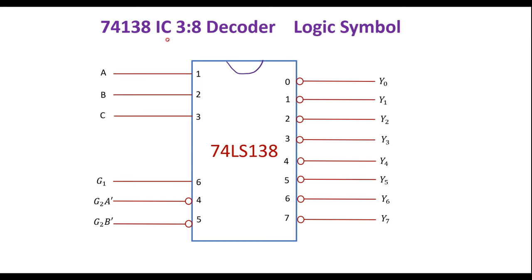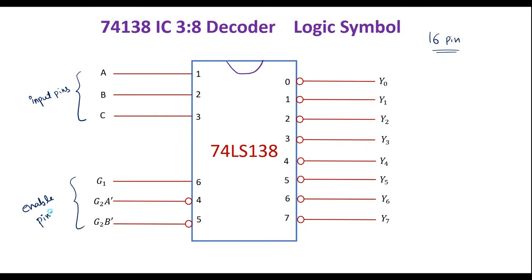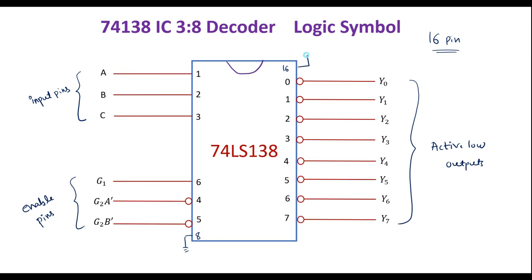This is the 74138 logic symbol. We can see that this 74138 is a 16-pin IC. Among the 16 pins, pins 1, 2, and 3 are the input pins, also called select lines. There are also enable pins, and the output pins have a bubble indicating active-low output. We have 3 plus 3 equals 6, plus 8, equals 14 signal pins. Pin 8 is ground and pin 16 is connected to VCC, giving us a total of 16 pins.